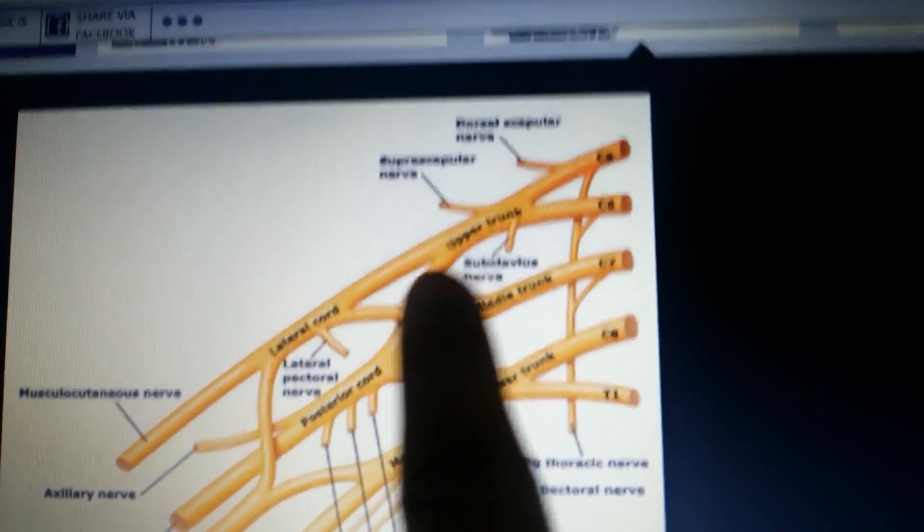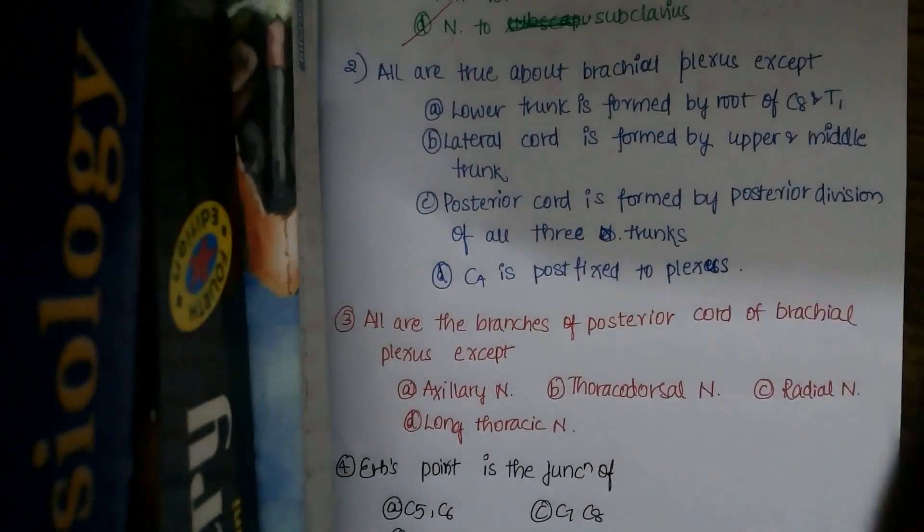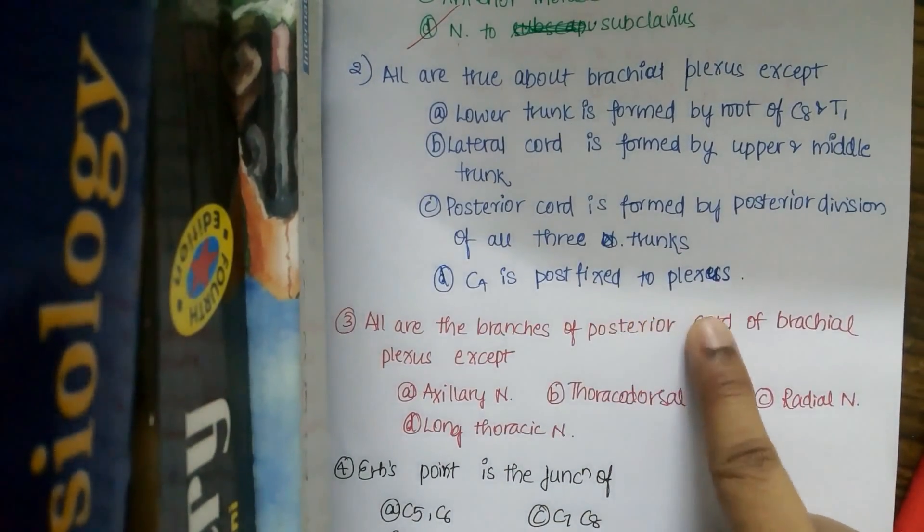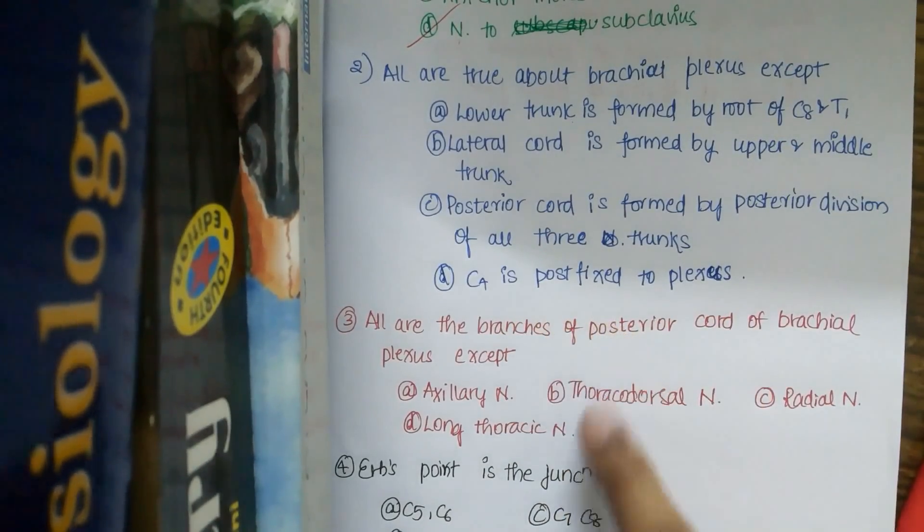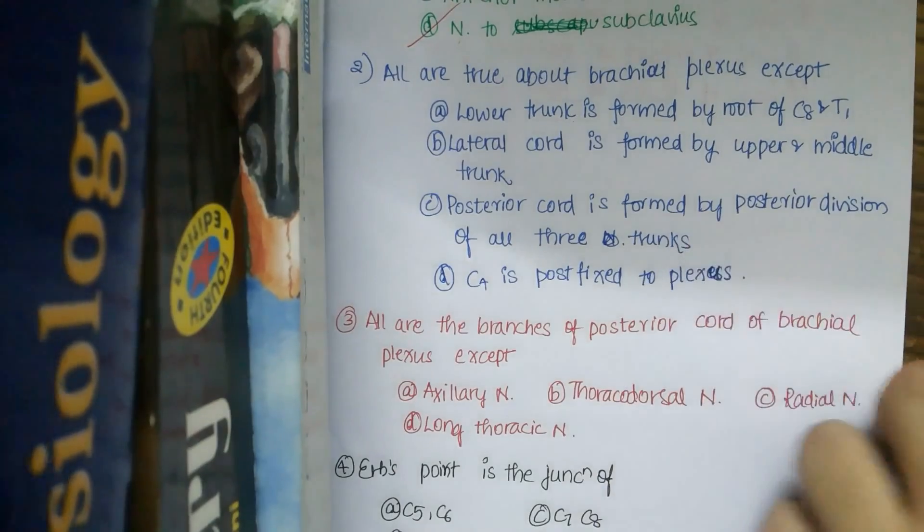Option D: C4 is postfixed to plexus. C4 is always prefixed, it is not postfixed. So D is the wrong answer in option 2.